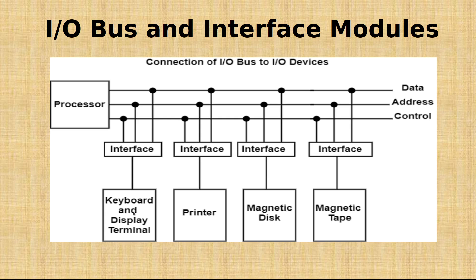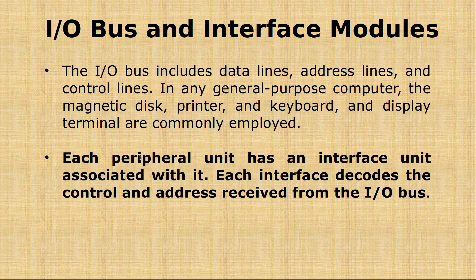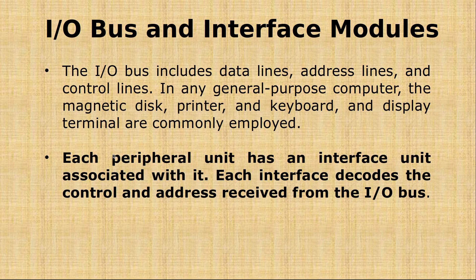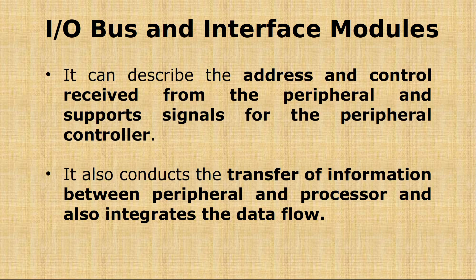The interface connects with the peripheral devices on one side and the processor on the other, allowing both to communicate through the interface. Each peripheral unit has an interface unit associated with it. This interface unit receives the address and control signals from the peripheral and provides support signals for the peripheral controller.